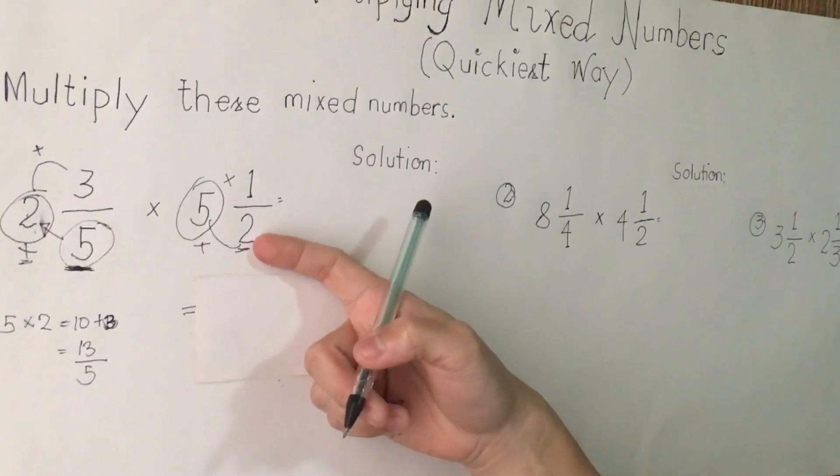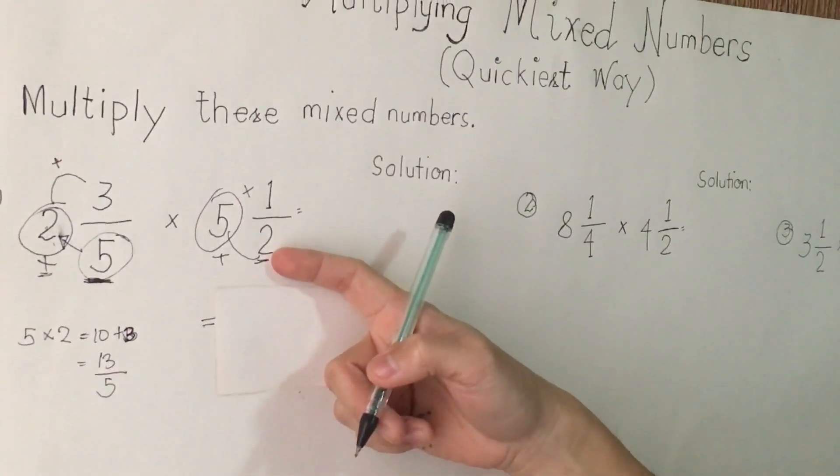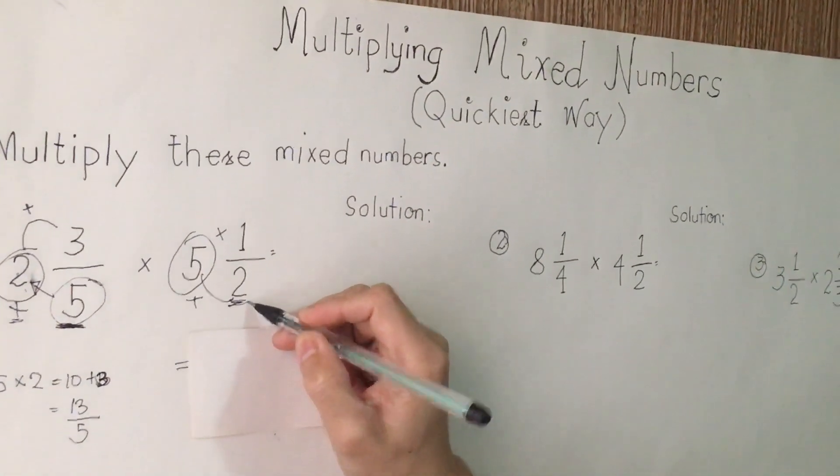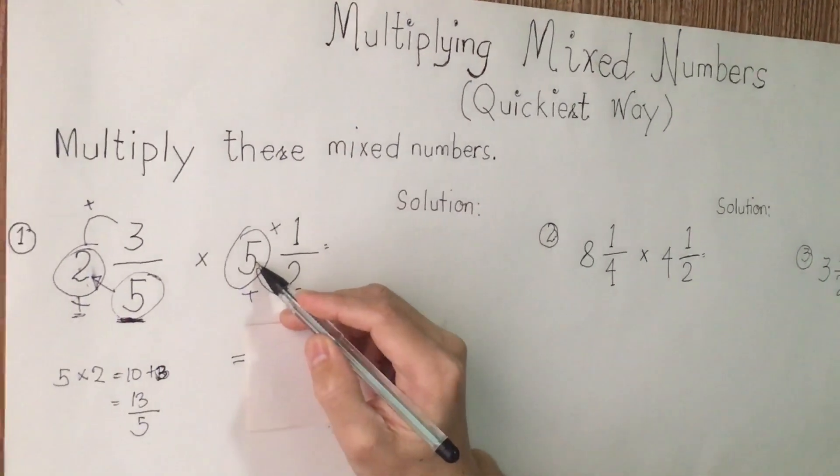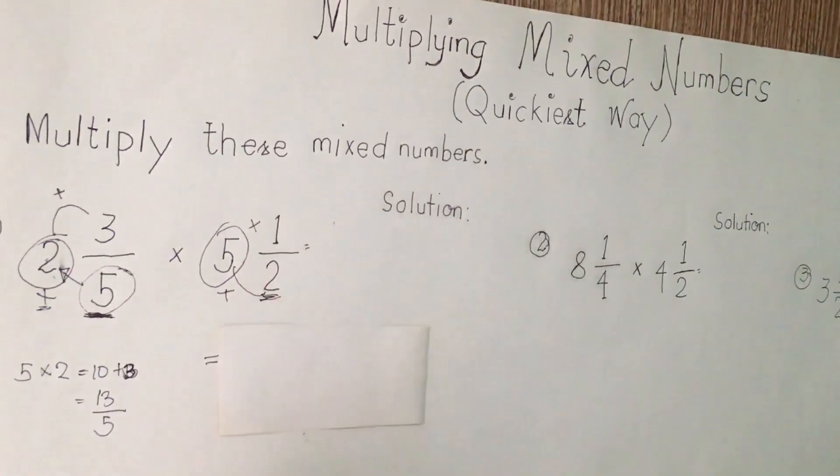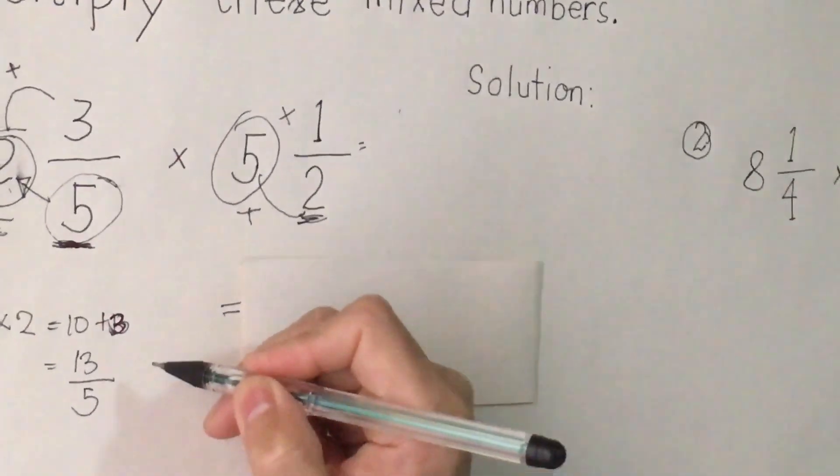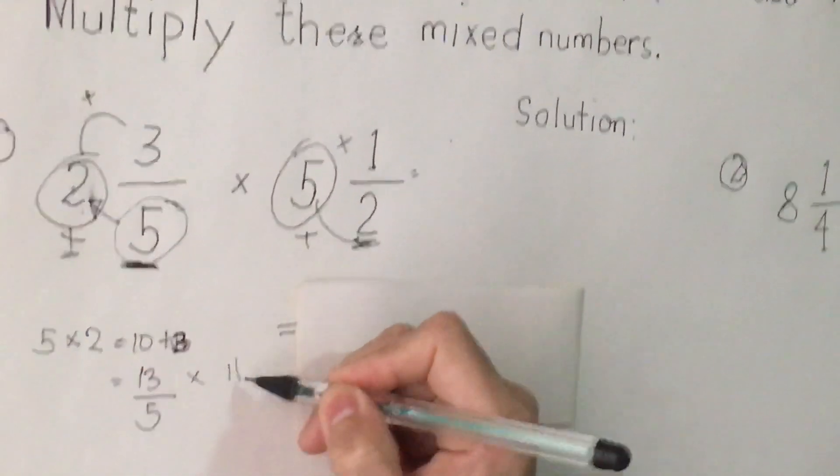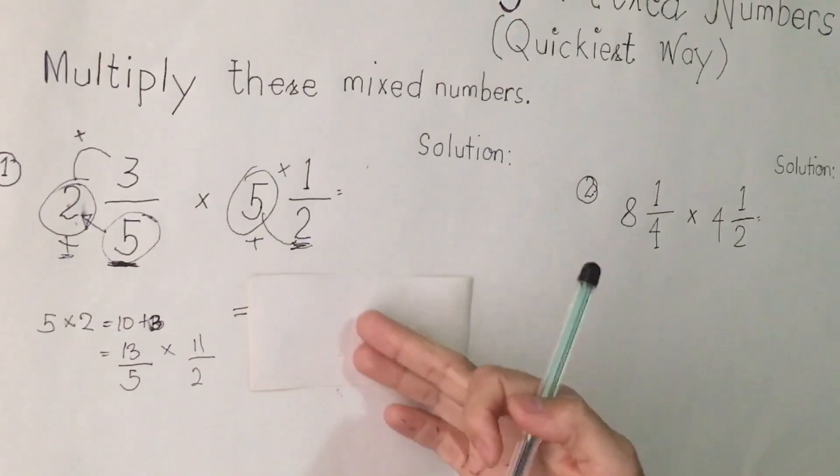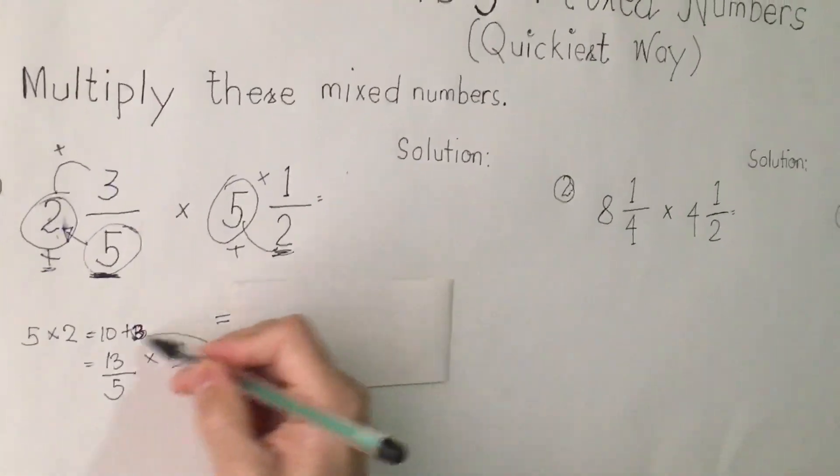Next, the second fraction. We are going to multiply the denominator, which is 2, multiply to 5. That's 10, plus 1, equals 11. So we are going to write here 11 over 2.